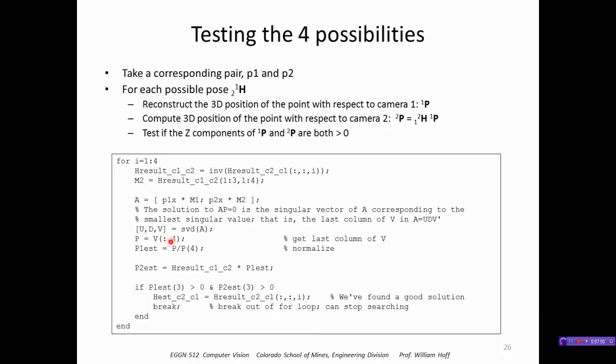So that's done here. This part reconstructs the point with respect to P1, and this reconstructed camera 1, and this reconstructs it with respect to camera 2. This checks to see if the Z value of the two points are greater than 0 in the two cameras. If it is, then we have our answer and we can break out of this loop here.